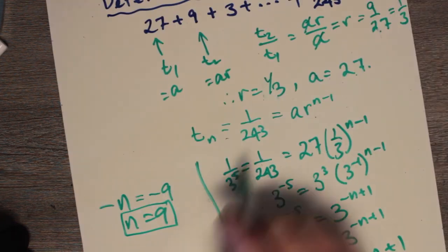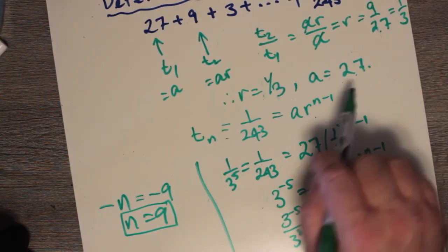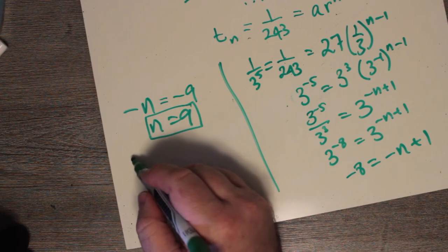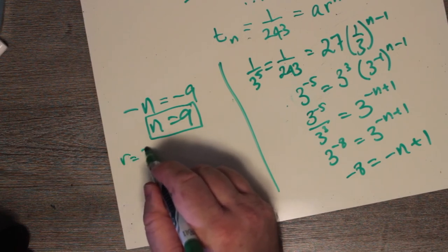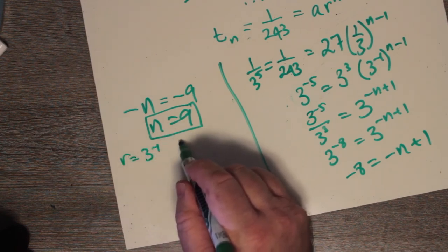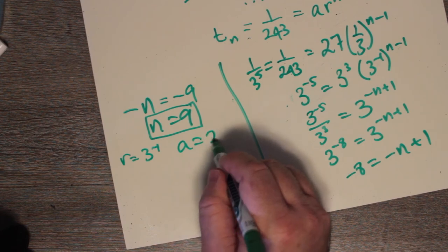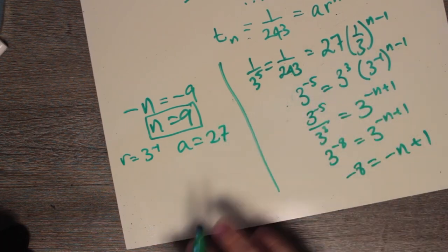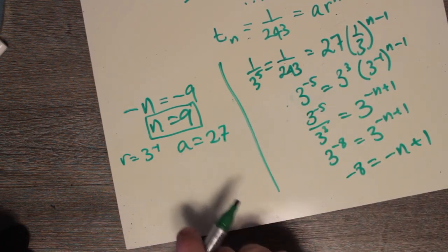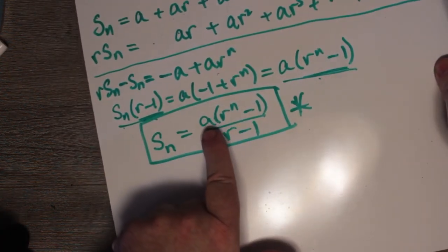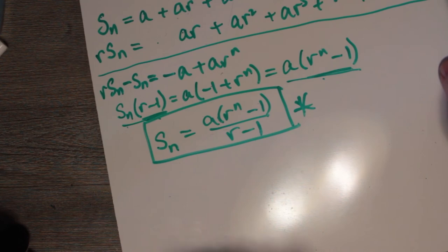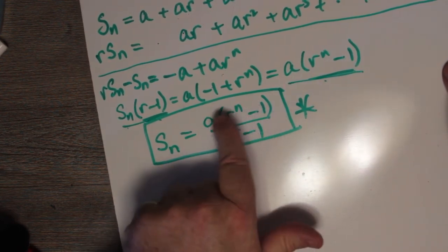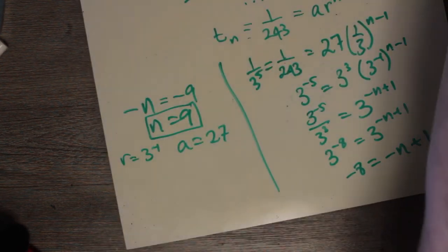The other numbers, just to remind you, were 1 third for r and 27 for a. So, we have r equals 3 to the minus 1 and we have a equal to 27. So, these are the numbers we have to work with for our sum formula. And that's this one. So, we know a now. We know r and we know n. We know everything there is required to be able to come up with the sum.